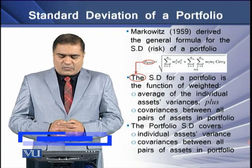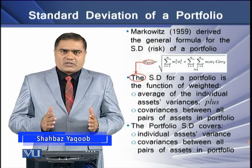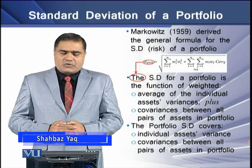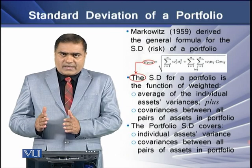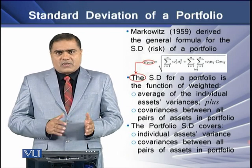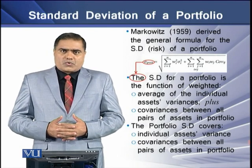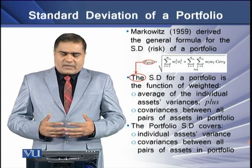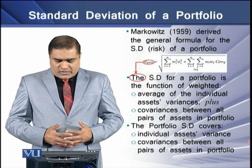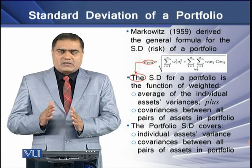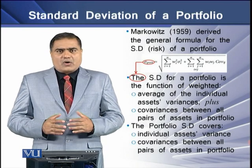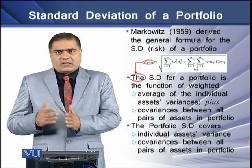This standard deviation formula for a portfolio is basically a function of two factors. The first is the average of the individual assets' variances, and the second factor is the covariances between all pairs of assets in the portfolio. So the portfolio standard deviation covers individual assets' variances and the covariances between all assets in the given portfolio.